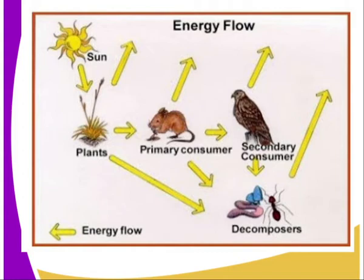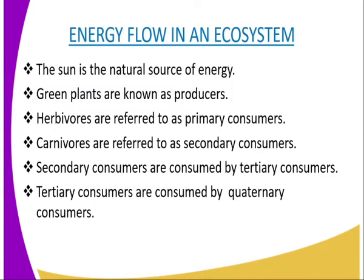These feeding levels, that is, producers and the consumer levels, are referred to as trophic levels. When living organisms die, they are decomposed by bacteria and fungi, which are referred to as decomposers, as you can see from our diagram. The energy moves from one trophic level to the next, e.g. from producers to the primary consumers. This passage of energy from one trophic level to the next results in loss of energy in the form of heat.